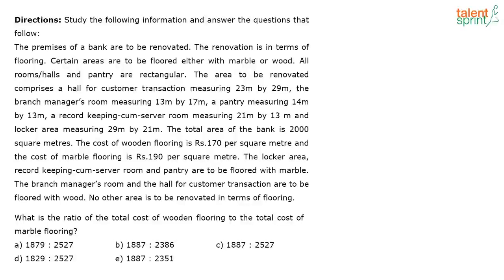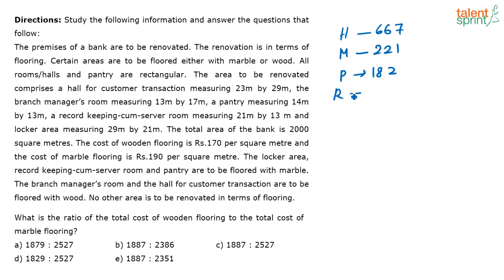What is the ratio of the total cost of wooden flooring to the total cost of marble flooring? You have already found out the area: the hall was 667 meters squared, the manager room was 221 meters squared, the pantry was 182 meters squared, the record room was 273 meters squared, and the locker room was 609 meters squared. Now, only these three rooms are getting marble.